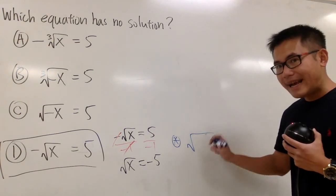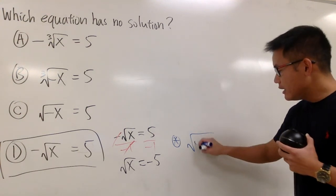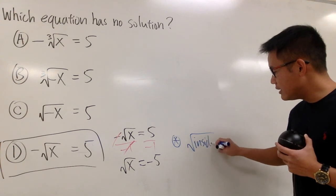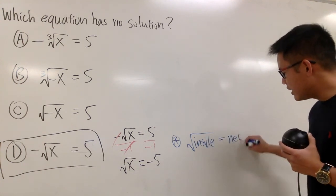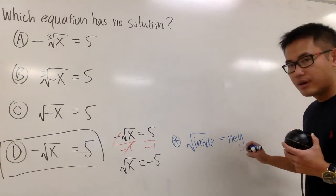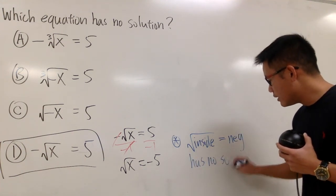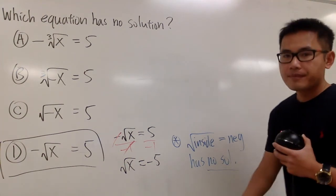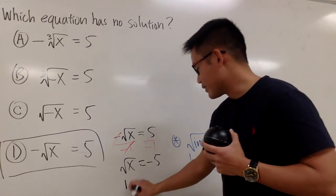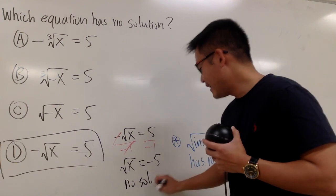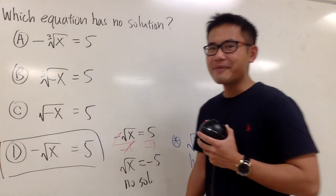Once you have the square root isolated — that's important, isolated — it doesn't really matter what you have inside. If you make this equal to a negative number, then this equation has no solution. So right here, you just have no solution, and that's the answer.